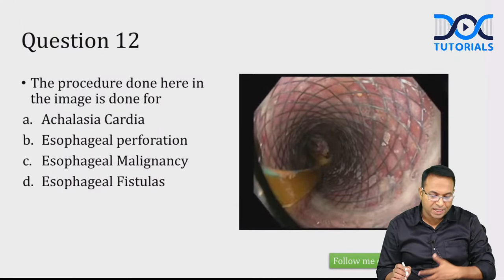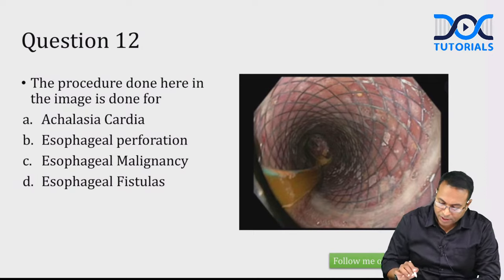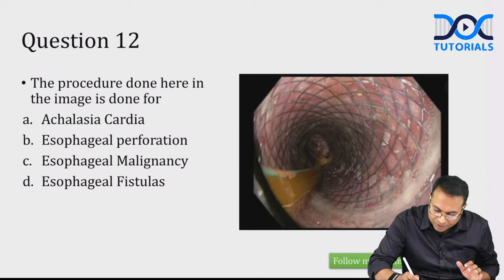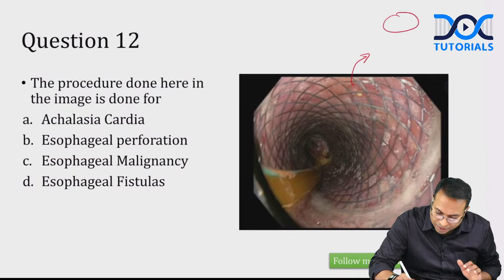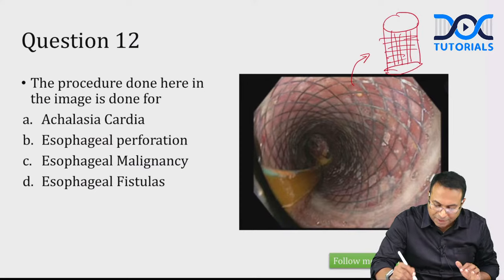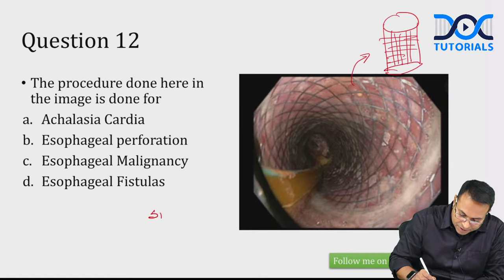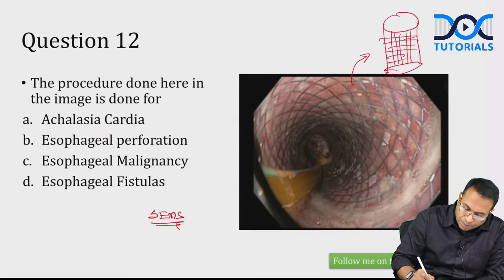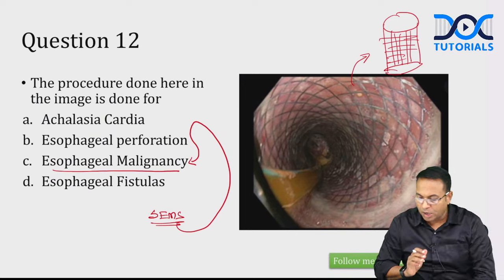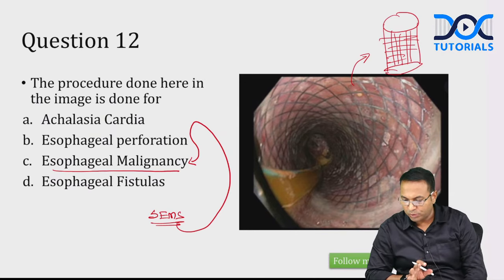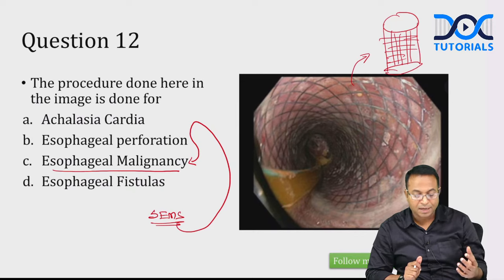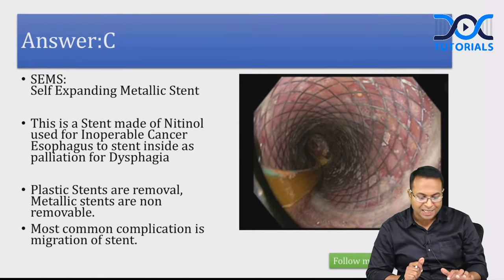The next procedure shows something like a mesh in the esophagus — a self-expanding metal stent, also known as SEMS. It is usually used for inoperable esophageal malignancy. For inoperable cancers of the esophagus, we insert a SEMS.